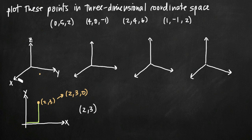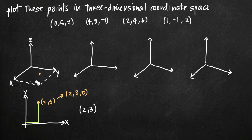What I mean by coordinate planes is that we have three coordinate axes — the x-axis, the y-axis, and the z-axis — and we then have three coordinate planes. The x, y coordinate plane is this flat plane that includes the x-axis and the y-axis but not the z-axis. Any point that lies in the x, y coordinate plane will have a z value of zero, and it is the same two-dimensional x, y coordinate plane we're used to seeing with two variables.